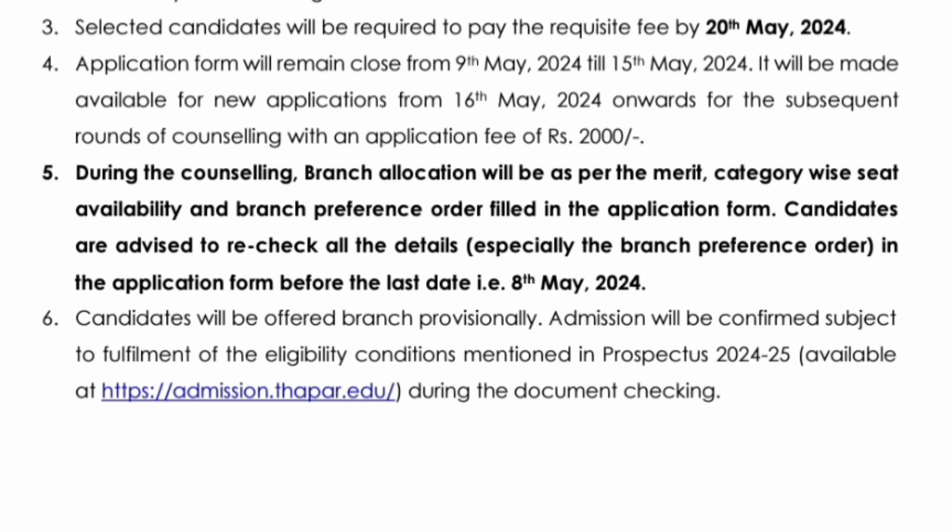During the counseling, branch allocation will be as per merit and category-wise seat availability. The branch preference order should be filled in the application form, and candidates are advised to recheck all the details — especially the branch preference — before submitting. Candidates will be offered a branch provisionally, and if they fulfill all the criteria mentioned in the brochure, then the admission is confirmed.